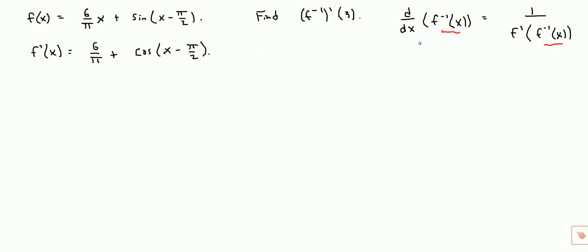Alright. So now we're trying to find the derivative of the inverse at a specific point. So the derivative of f inverse of x evaluated at x equals 3, that's going to be 1 over f prime of f inverse of 3. Alright, so we do not know what f inverse of 3 is. So we need to find that.